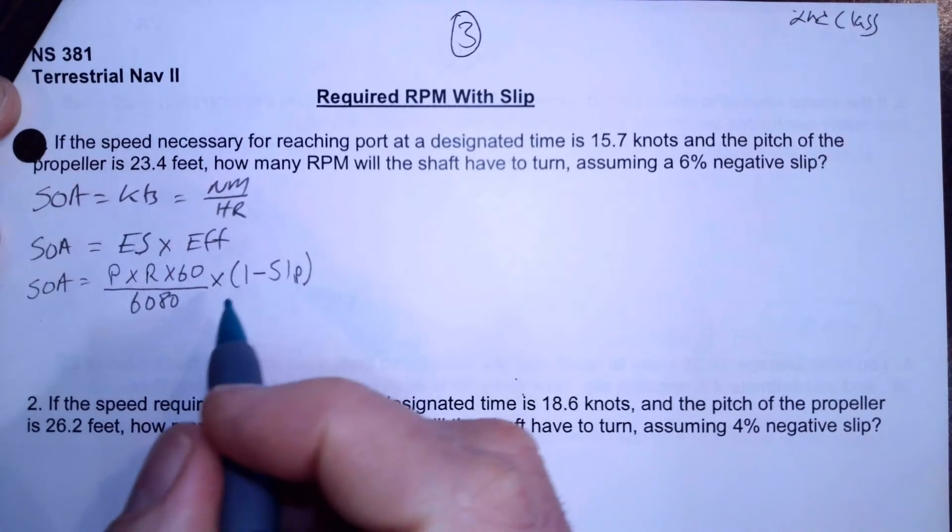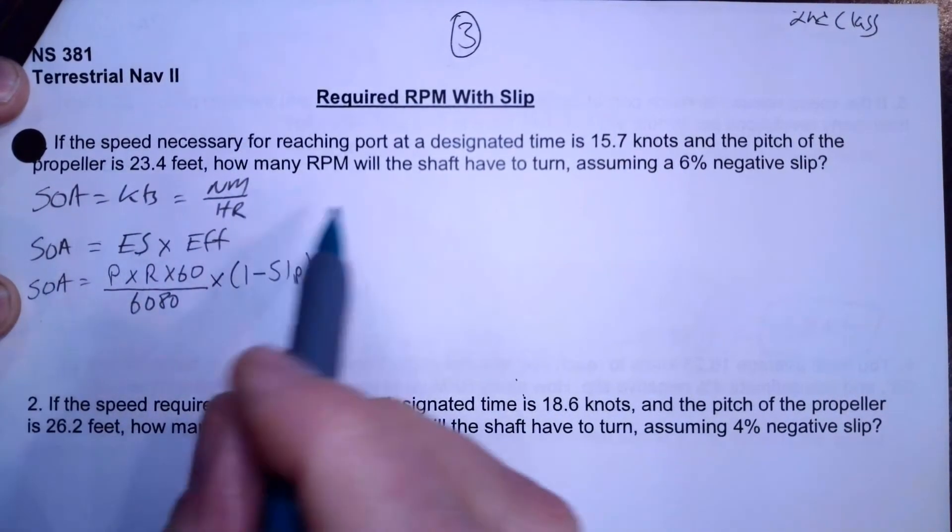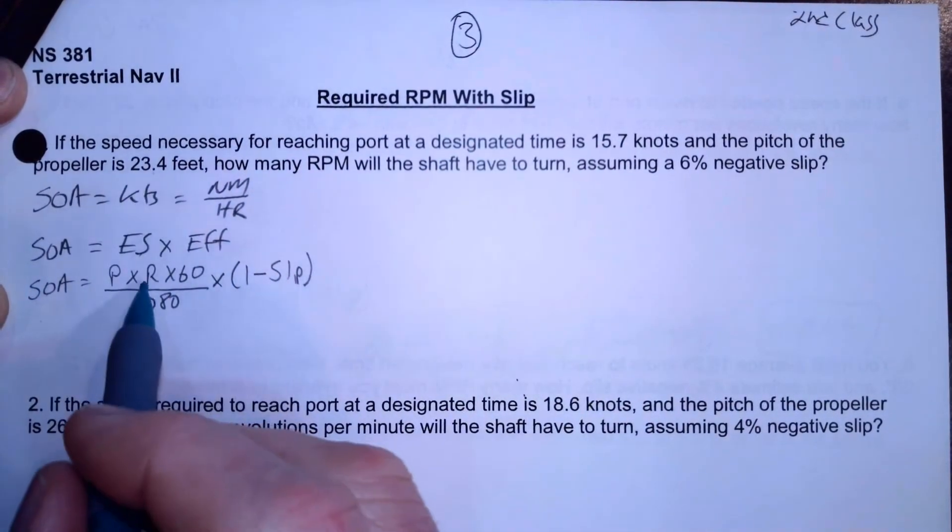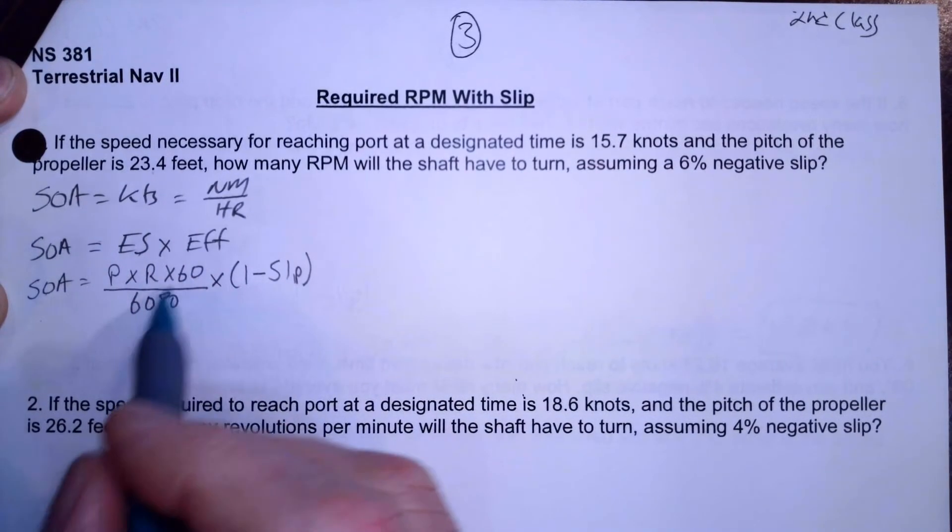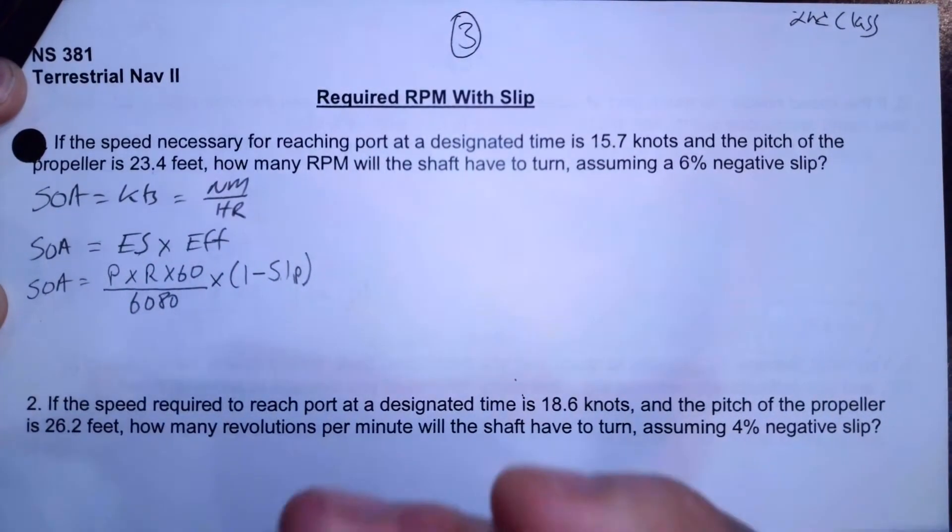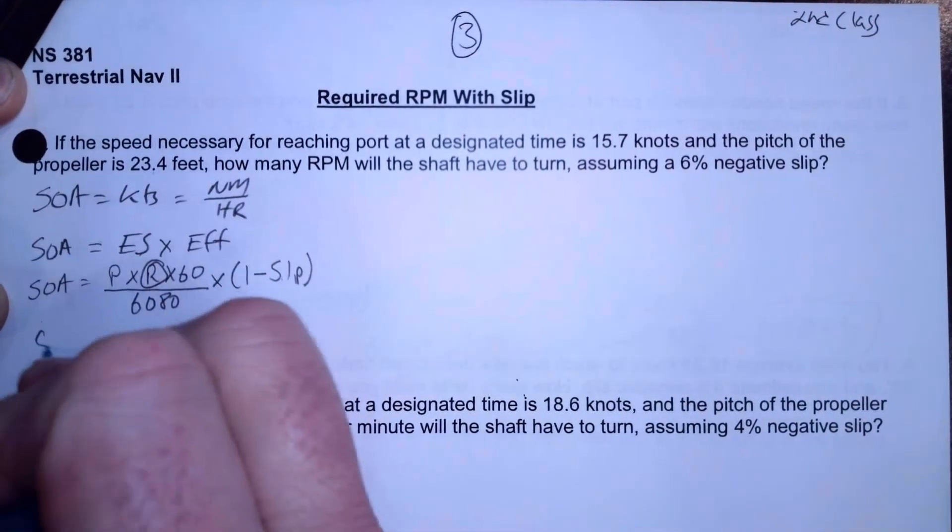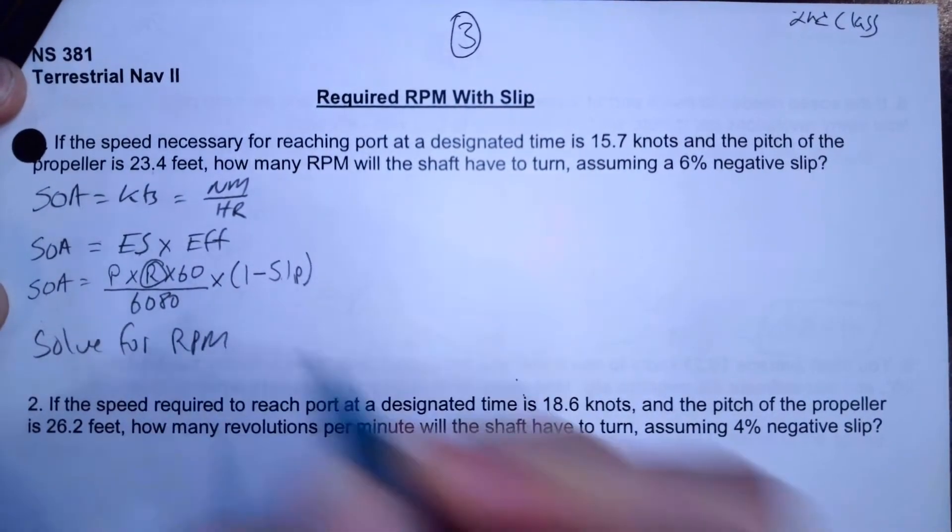So now I have this formula, and I'm going to be given speed of advance, that in this case is 15.7. I'm going to be given pitch, which in this case is 23.4. I'm looking for RPM. I'm given these conversion factors that I know, and then one minus slip. So I have to solve this formula for RPM.